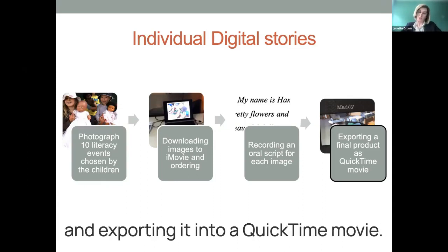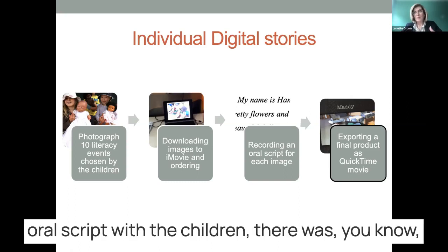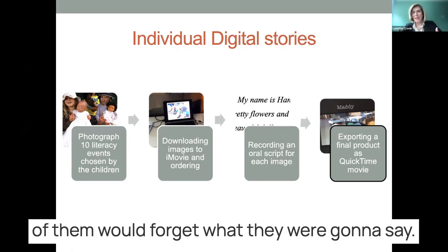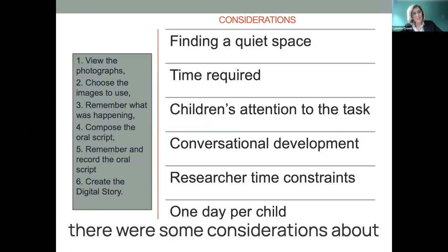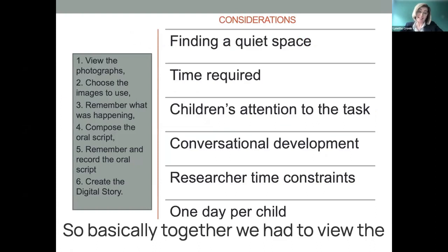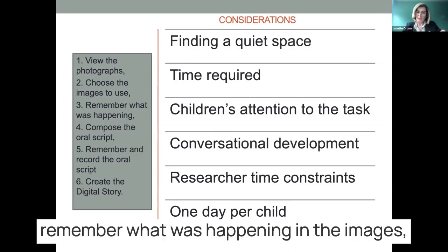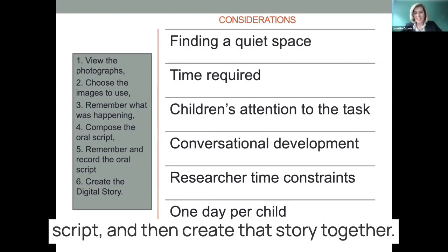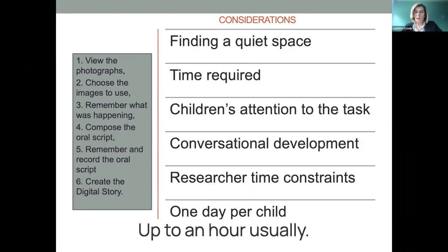As you can imagine, in that creation of the oral script with the children there was sometimes re-recording — children would forget what they were going to say — so it took a little bit of time. The full process involved viewing the photographs, choosing images to use, remembering what was happening, composing the script, remembering and recording the script, and then creating the story together. It took about 45 minutes, give or take up to an hour usually.